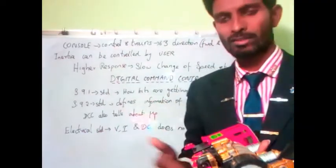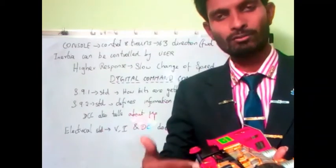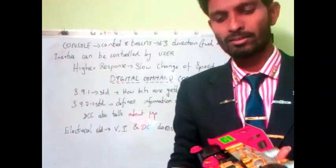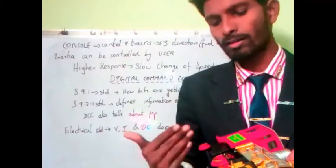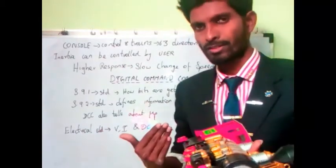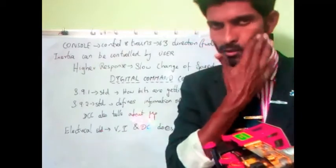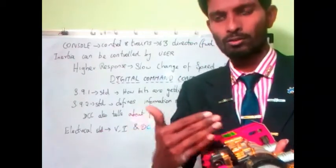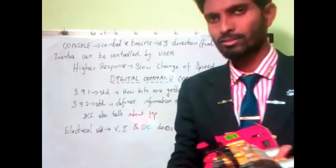According to our definition from last class, all these controls — whether electric control, data control, any data package, arrival, receiving, or everything — should go through the wheels. So the wheels have control all over the train and control all information to be shared.